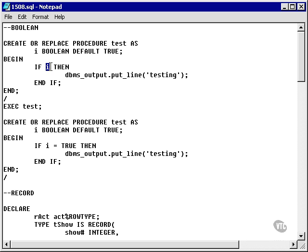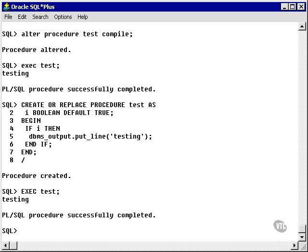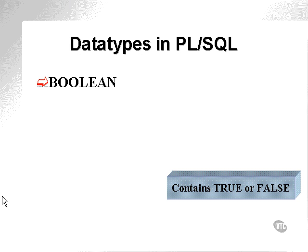since it's true, in other words if I evaluates to true, it will output this line and give me a result that says testing. So, I'll now execute the test procedure and I get the result that says testing.